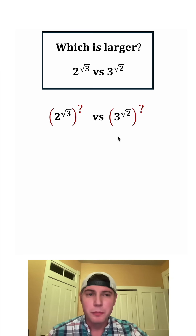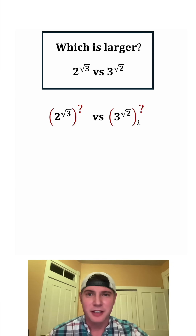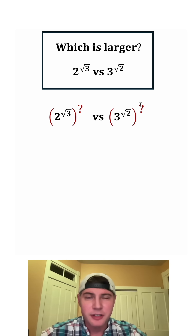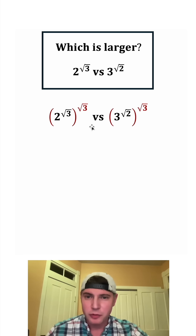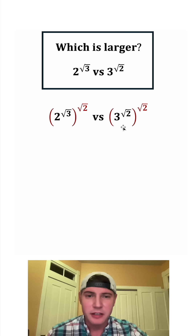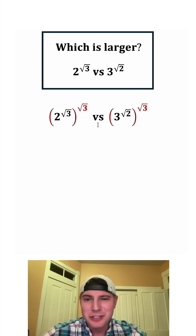I'm thinking let's raise both sides to the same power — that might clean up these exponents. Whatever we choose, we're gonna end up multiplying the exponent on each side by that number. If we choose square root of three, the left side will be really clean, but the right will still have a radical. Or we could do square root of two — clean on the right, radical on the left. I'm not sure which is best, so let's try square root of three.